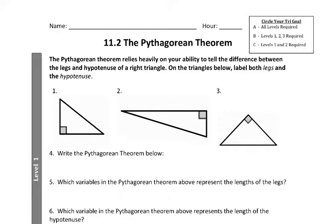The Pythagorean theorem relies heavily on your ability to tell the difference between the legs and the hypotenuse of a right triangle. On the triangles below, you need to label both legs and the hypotenuse. Every right triangle is made up of two legs and a hypotenuse. A right triangle always has one right angle in it, and the two legs are the sides of the triangle that make up the right angle. So if you can find the right angle on a right triangle, then you know exactly where the two legs are. And then the side on the opposite side of the right triangle is the hypotenuse.